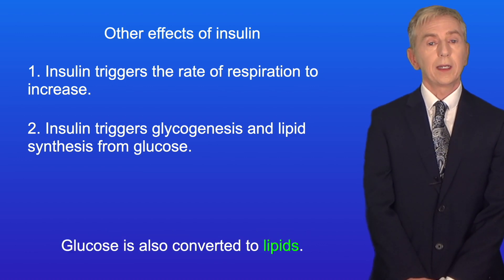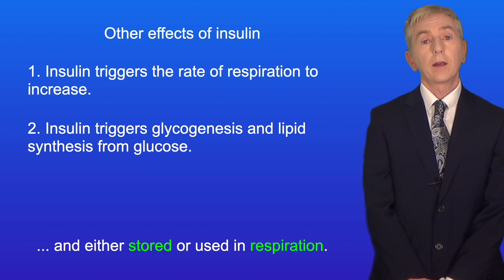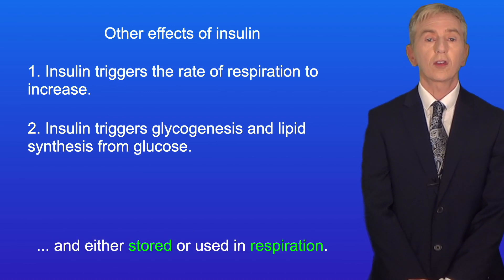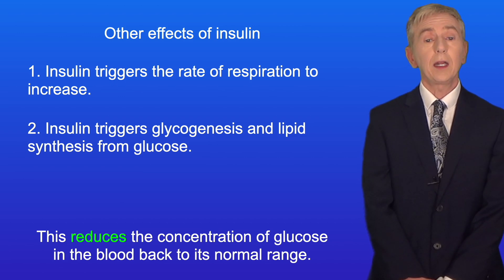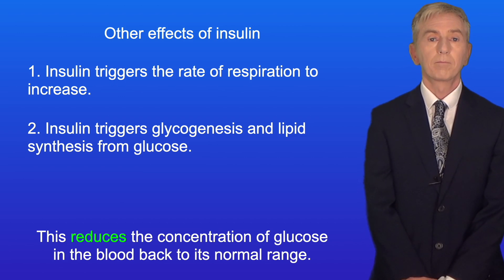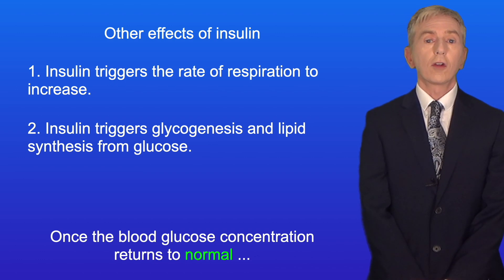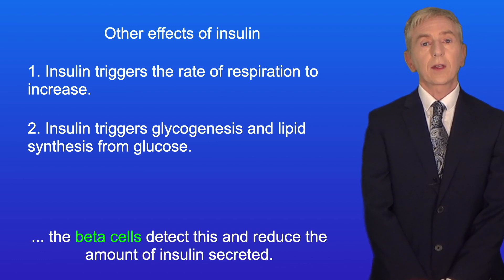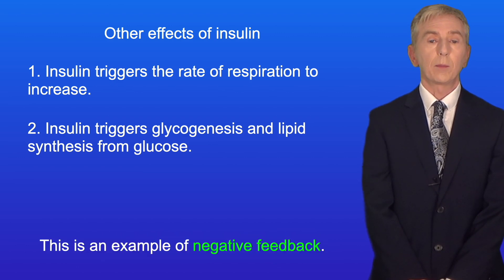Glucose is also converted to lipids. The effect of all of these processes is that glucose is removed from the blood and either stored or used in respiration, and this reduces the concentration of glucose in the blood back to its normal range. Once the blood glucose concentration returns to normal, the beta cells detect this and reduce the amount of insulin secreted — and this is an example of negative feedback.